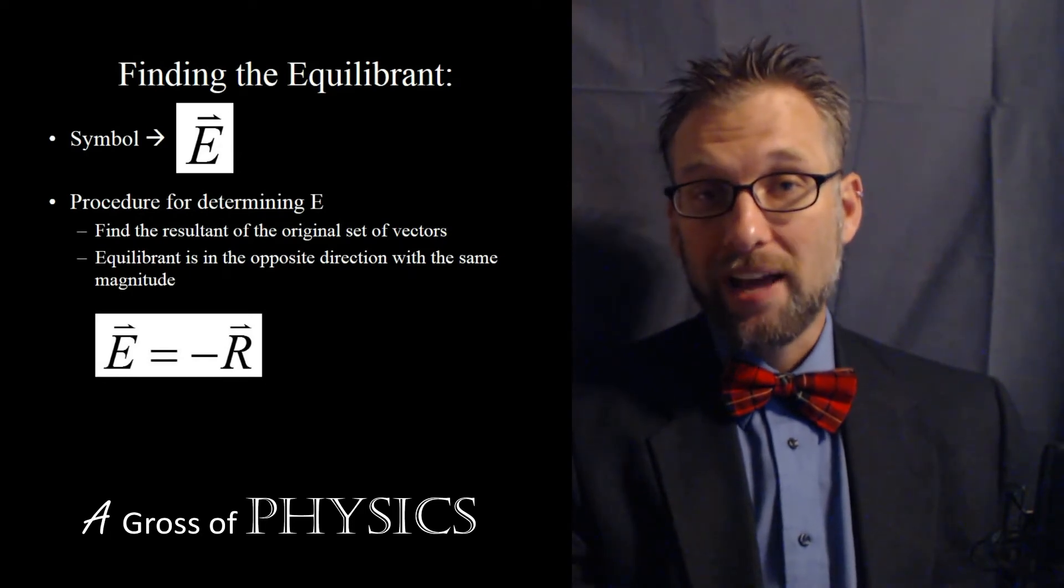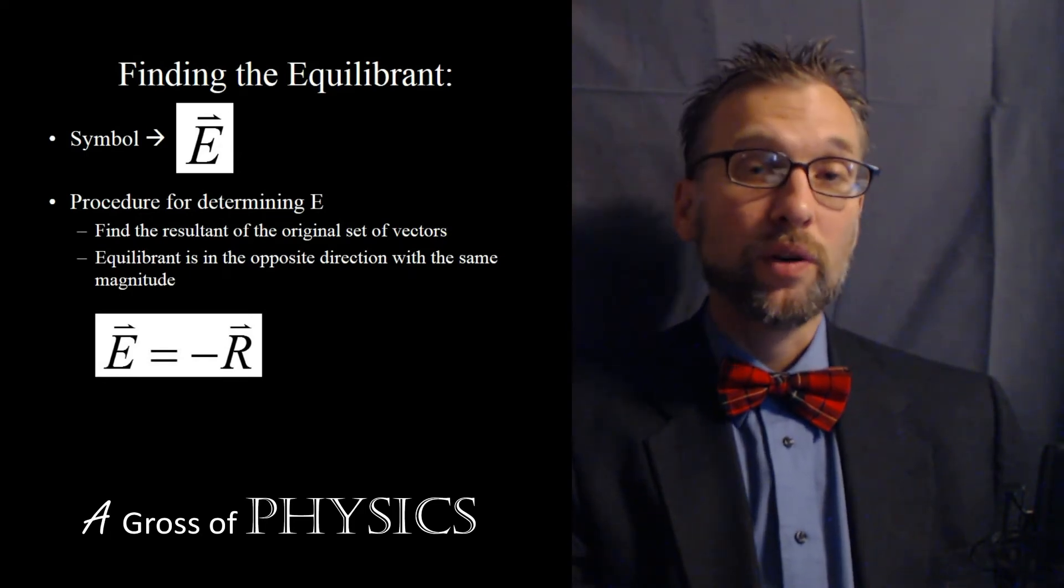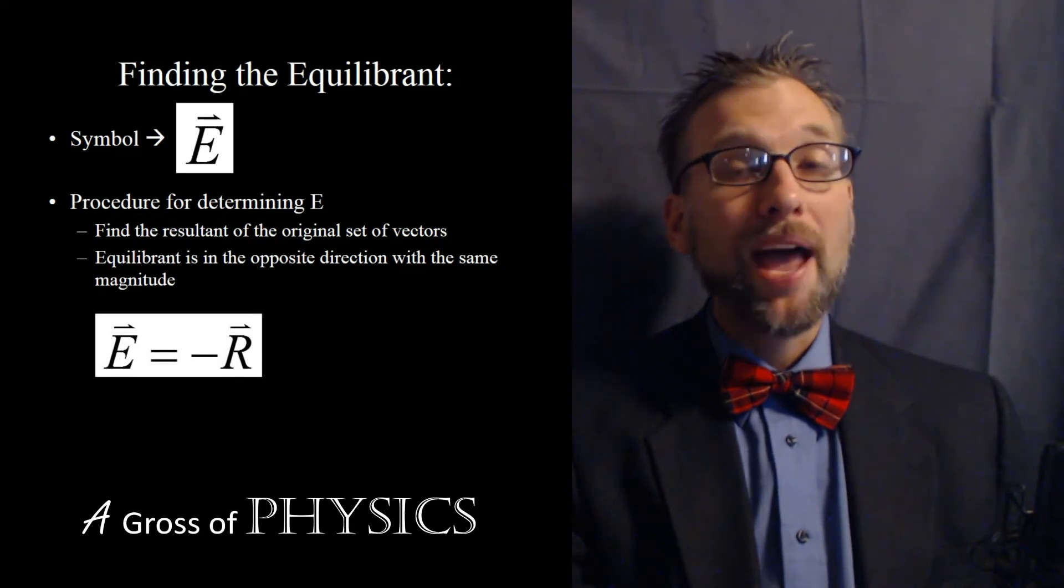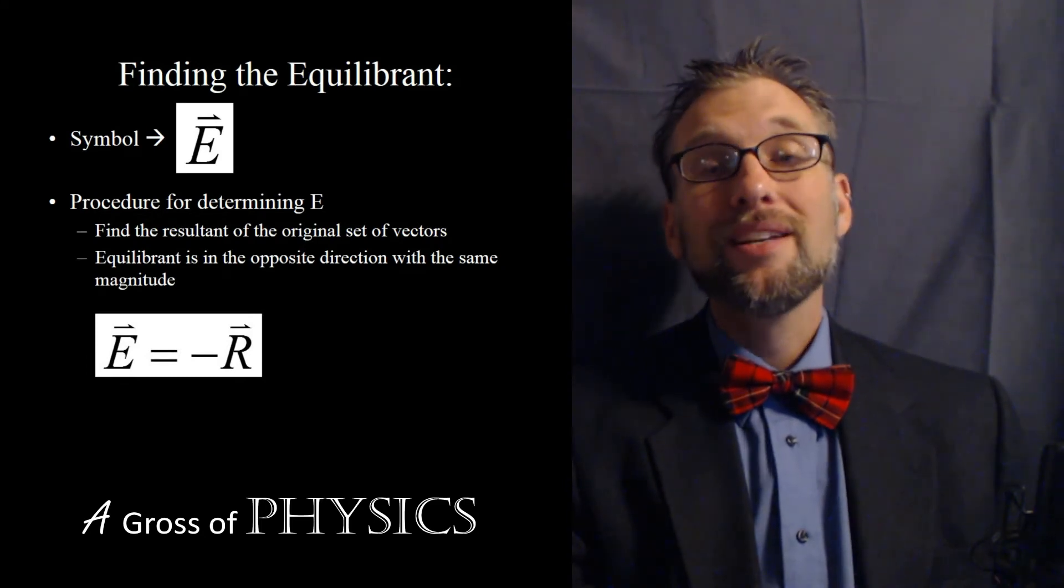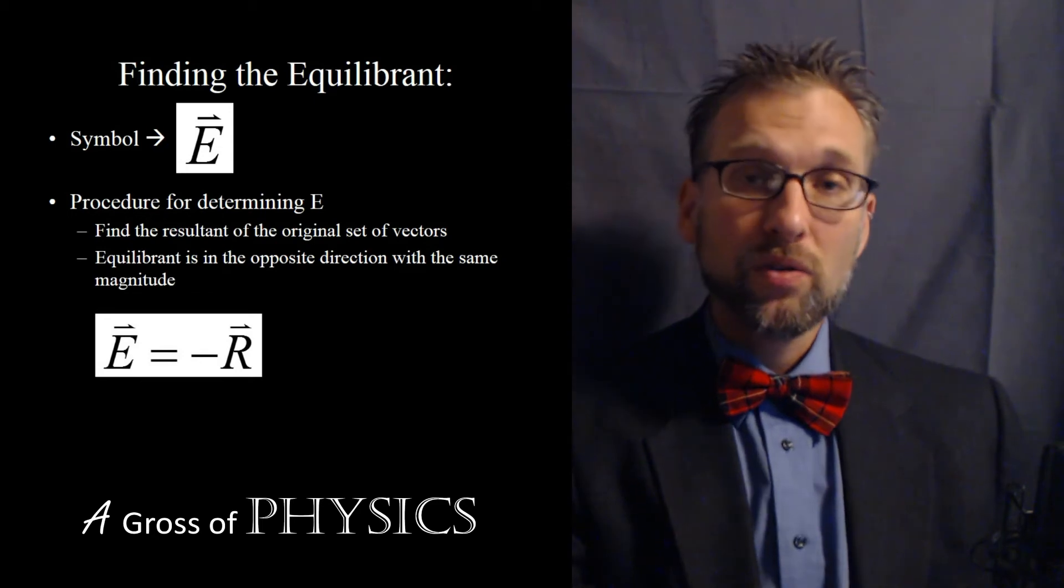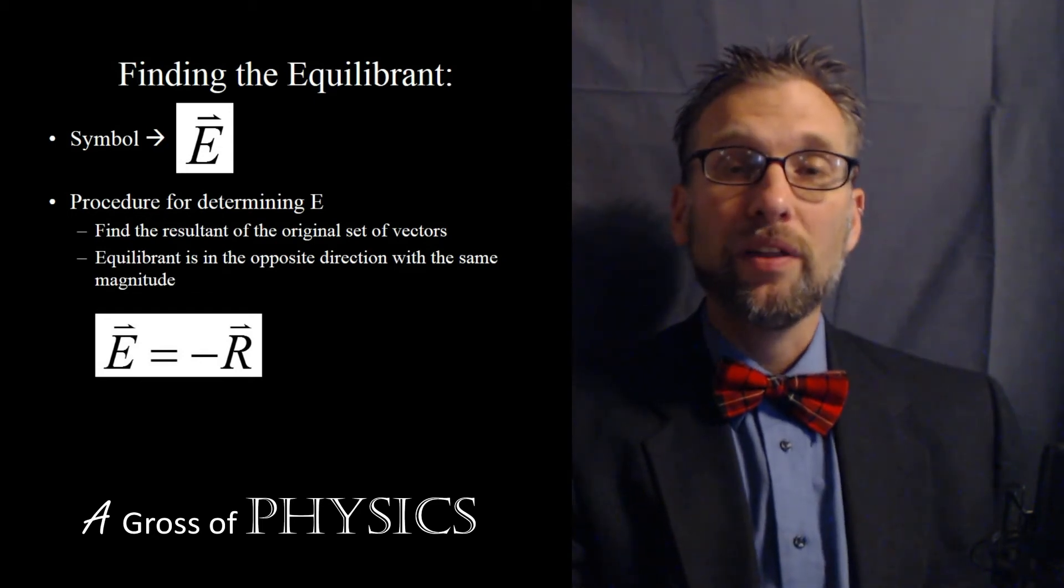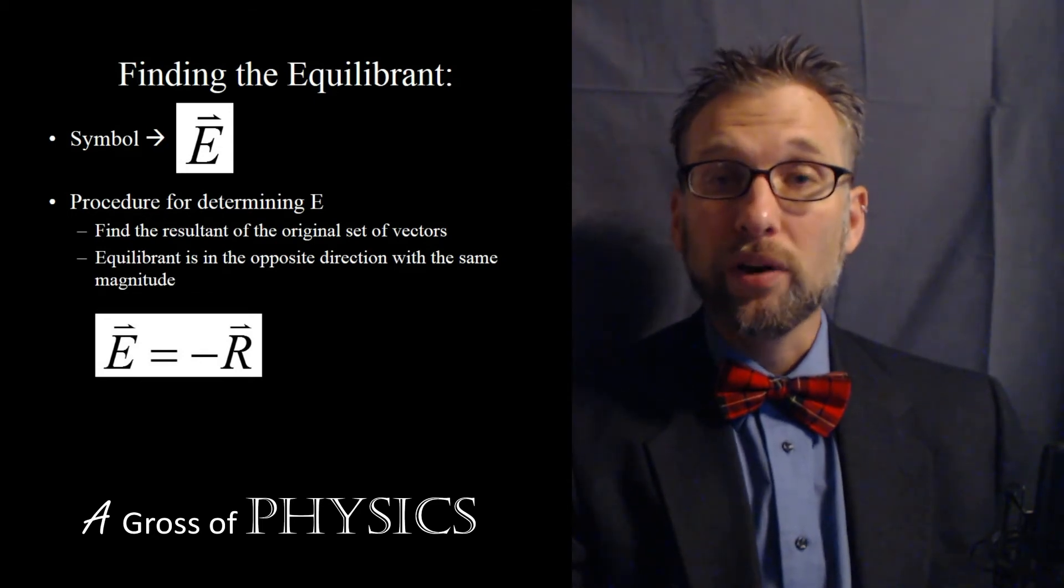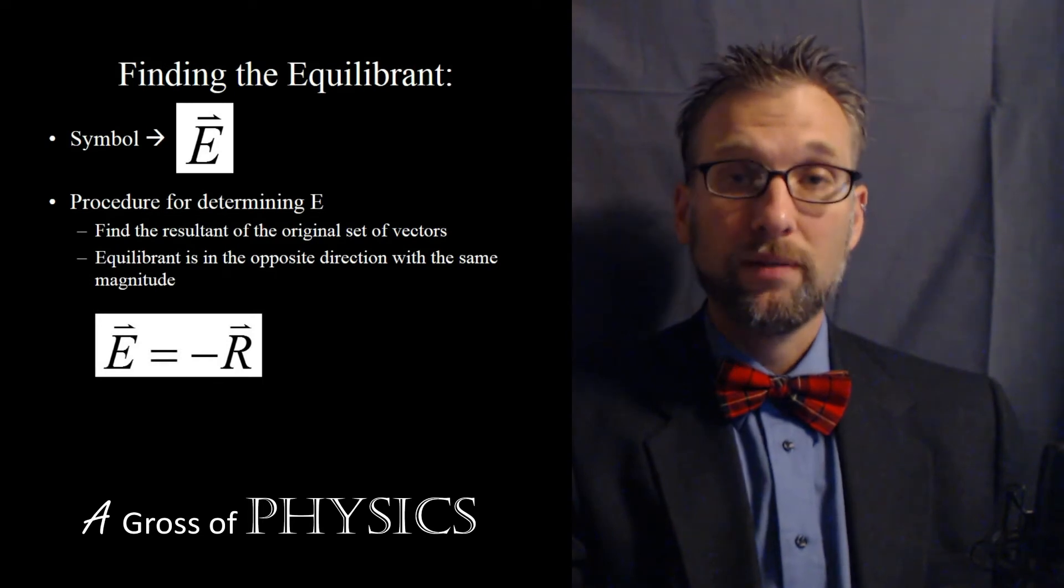If you're in quadrant one or two, you would add. If your resultant is in quadrant three or four, you would subtract. The magnitude and the units stay the same. Now let's do some practice problems dealing with finding the equilibrant if we know the resultant.